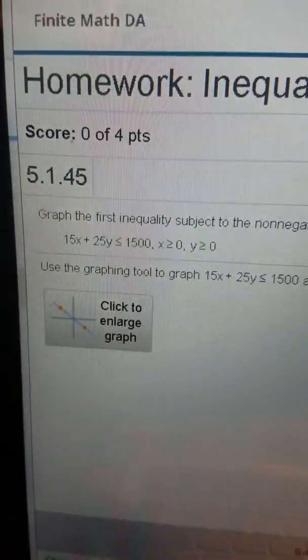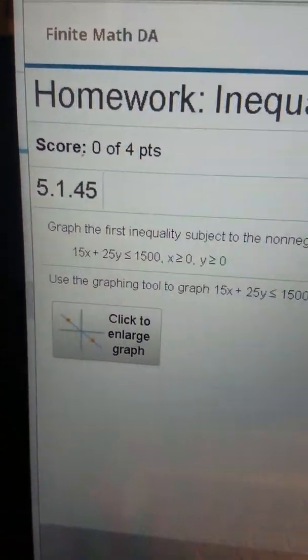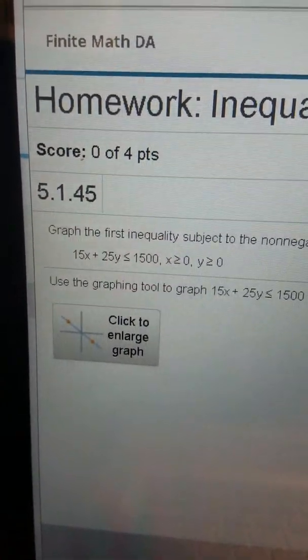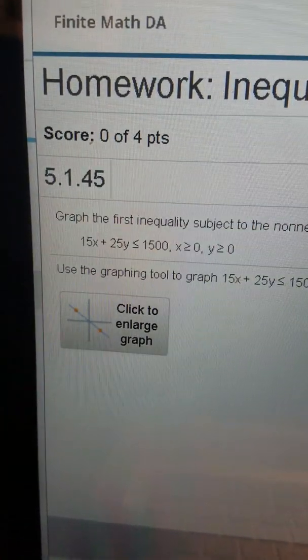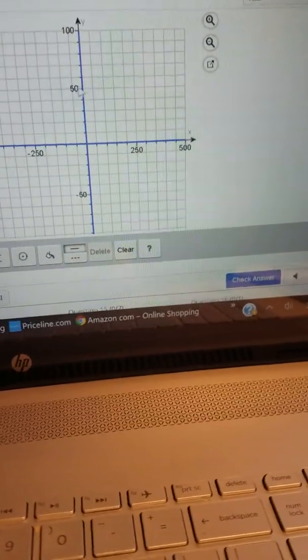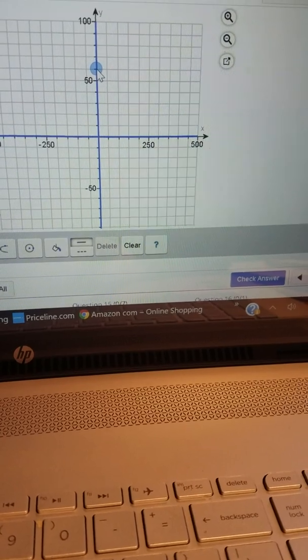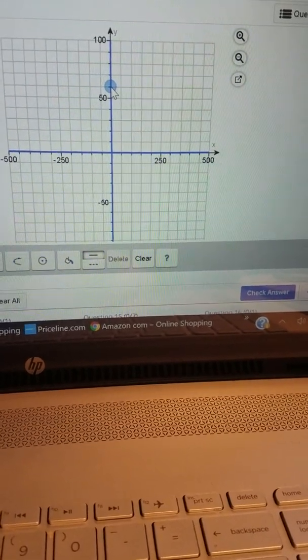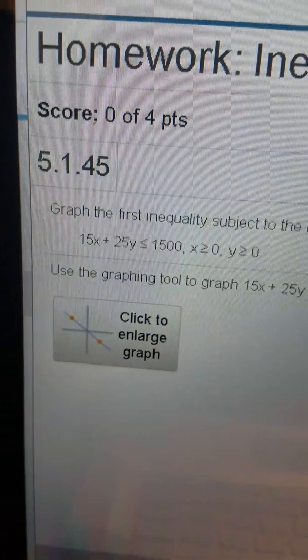Let's see, if I plug in x equals 0 then I get y equals 60. So 0, 60 should be my first point on the graph and then if I plug in 0 for y I get x equals 100.